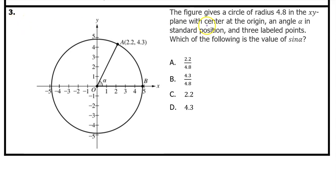Number 3. The figure gives a circle of radius 4.8 in the xy plane with center at the origin, an angle α in standard position, and three labeled points. Which of the following is the value of sin α? Hopefully you have memorized these three formulas. They are asking us for the value of sin α, so we're going to use the first formula. Sin α is going to equal the y value, which is 4.3, divided by the radius, and we are told that the radius is 4.8. So that's it. The answer is B.